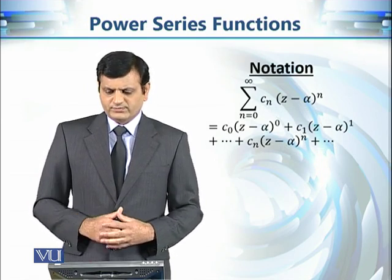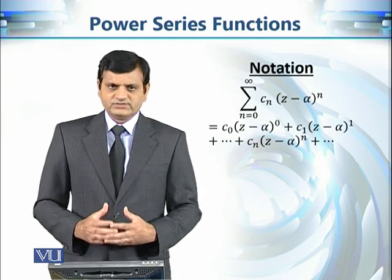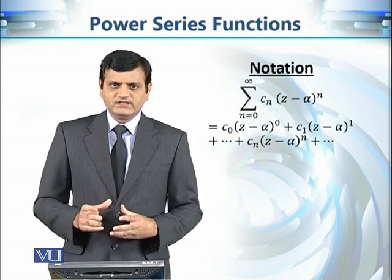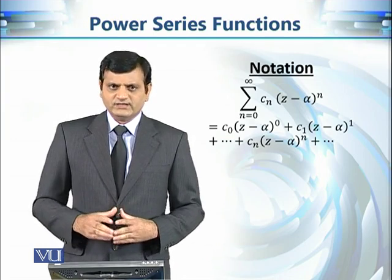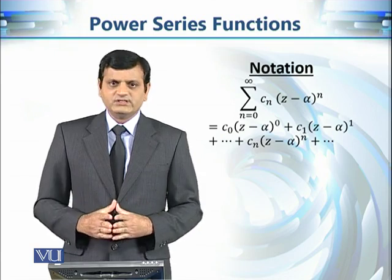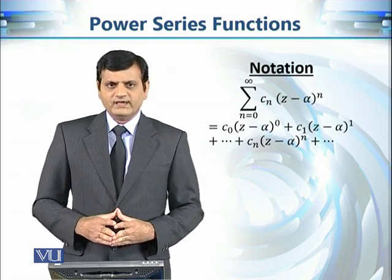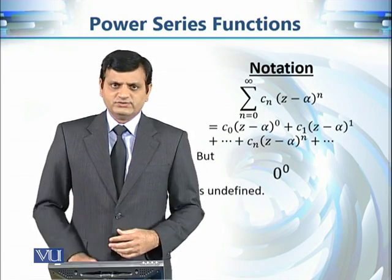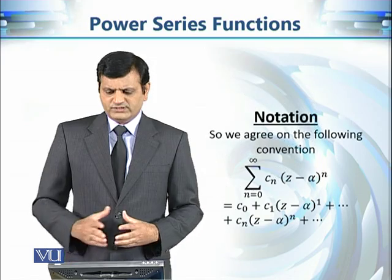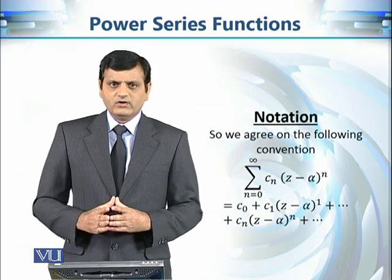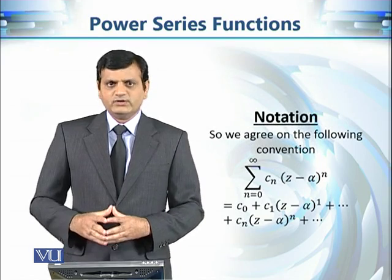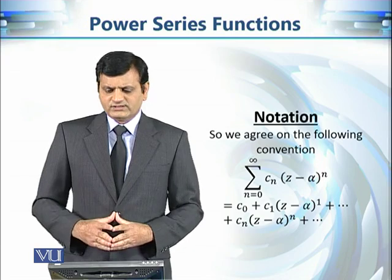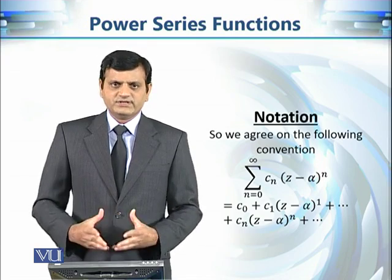There is a small issue with notation. When we expand the series, the first term is c₀(z − α)⁰. The problem is that when z = α, this becomes 0⁰, which is undefined. To solve this, we adopt a simple convention: the first term always means c₀, not c₀ multiplied by (z − α)⁰. This convention avoids the undefined situation.